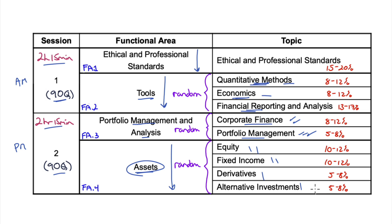All of these are the weightings. So if you want to know how many ethics questions there will be, it's 15 to 20% of the exam — not 15 to 20% of 90, but 15 to 20% of 180, because there are 180 total questions on the exam. Ethics will make up 15 to 20% of that, and the numbers will vary depending on how they structure it. Now we have ranges instead of solid numbers for each section.